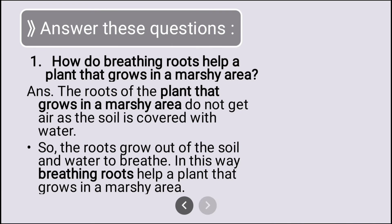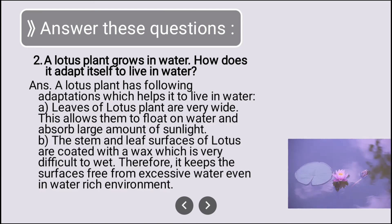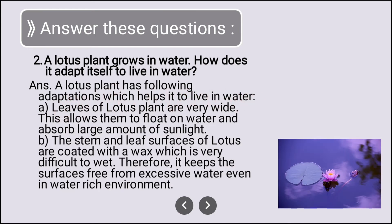A lotus plant grows in water — how does it adapt itself to live in water? The lotus plant has the following adaptations: first, the leaves of the lotus plant are very wide, which allows them to float on water and absorb a large amount of sunlight. Second, the stem and leaf surfaces are coated with wax, which keeps the surfaces free from excessive water even in a water-rich environment.